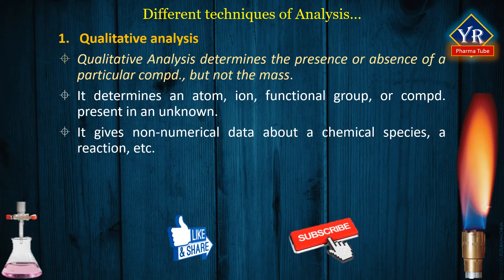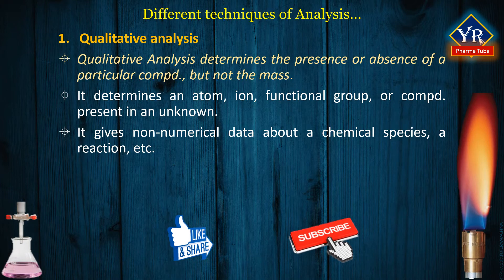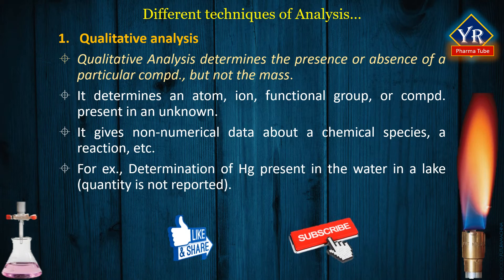Qualitative analysis gives non-numerical information about a chemical species or a reaction. It is an analysis carried out to determine only the identity of a pure analyte, the identity of an analyte in a matrix, or the identity of several or all components of a mixture. For example, if a chemical analysis is carried out and it is reported that mercury is present in the water of a lake but the quantity of mercury is not reported, then the analysis is a qualitative analysis.